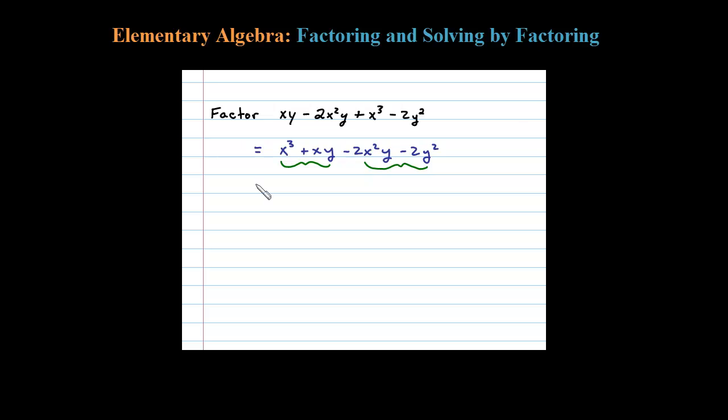Okay, so let's group the first two. In the first two it looks like the GCF is x. When I factor out that x, what will be left is x squared plus y.